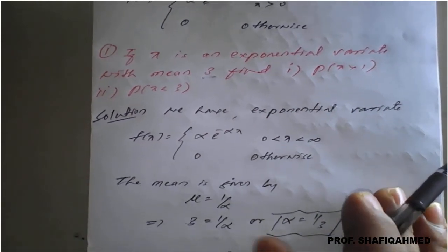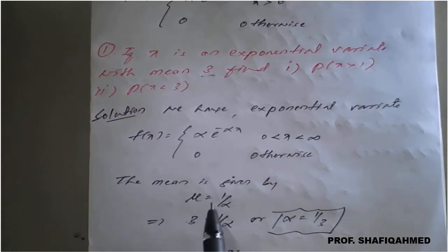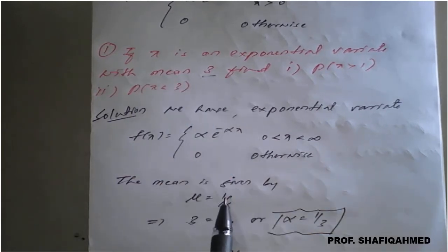As per the given question, the mean is given by mu, which is nothing but 1 upon alpha. It is given as 3 equals 1 upon alpha. The mean in exponential distribution is 1 upon alpha, which is given in the question as 3. So 3 equals 1 upon alpha, or alpha equals 1 by 3. We got the alpha value.